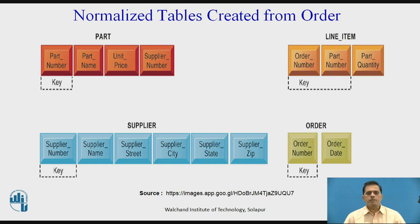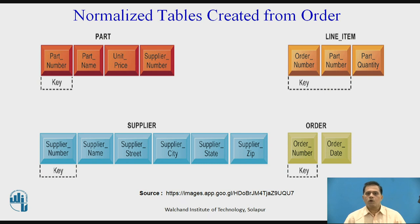The normalized tables have been created from the order database. The order table has been broken down into four smaller related tables. Notice that the order table contains only two unique attributes: order number and order date. Multiple items ordered are stored using the line item table. Normalization means very little data has to be duplicated when creating orders, and most information can be retrieved using keys to the part and supplier tables.